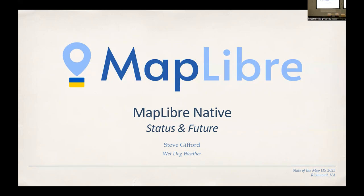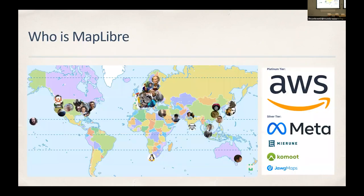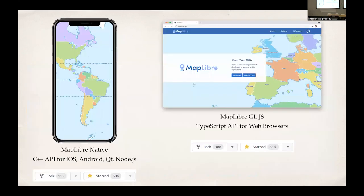Let's move down the stack towards the renderer side of things. MapLibre is the inheritor of the Mapbox GL APIs. When Mapbox went to closed source with newer versions, MapLibre forked those versions and made them their own. It has been since trying to organize updates and maintenance. It's a worldwide organization — anybody can join, anybody can contribute. Standard open source stuff, though it's heavily based in Europe with some corporate involvement in the US.